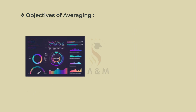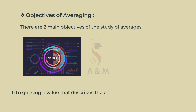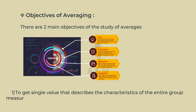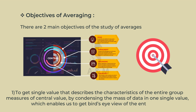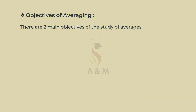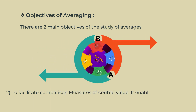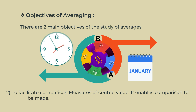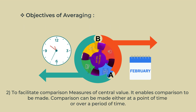There are two main objectives of the study of averages. First, to get a single value that describes the characteristics of the entire group. By condensing the mass of data into one single value, it enables us to get a bird's eye view of the entire data. Second, to facilitate comparison. It enables comparison to be made either at a point of time or over a period of time.